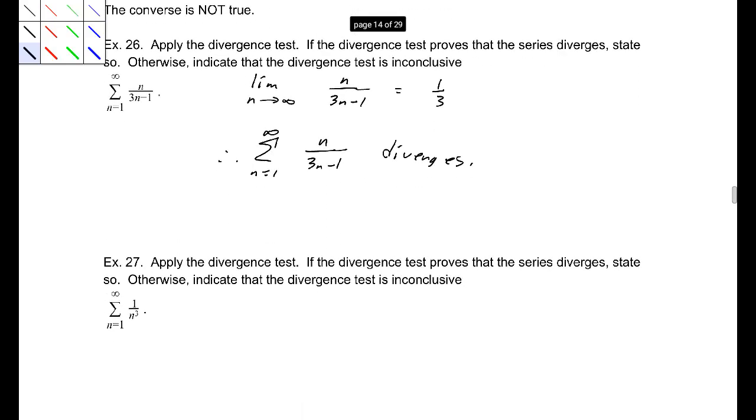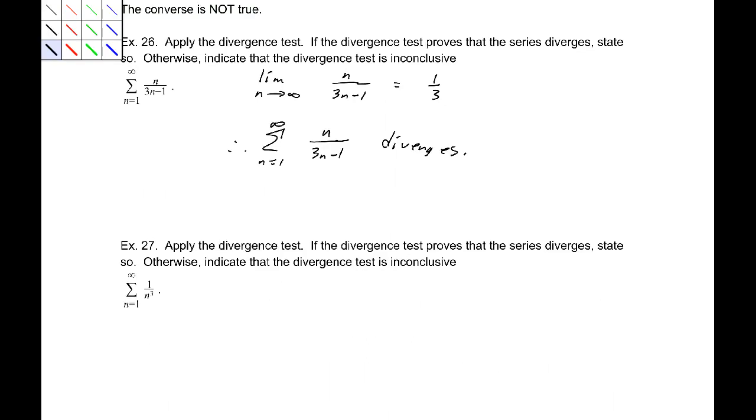Next example, we have the sum from 1 to infinity of 1 over n cubed. Well, let's take the limit. Series just make me excited. I keep writing too fast. The limit of 1 over n cubed is 0.